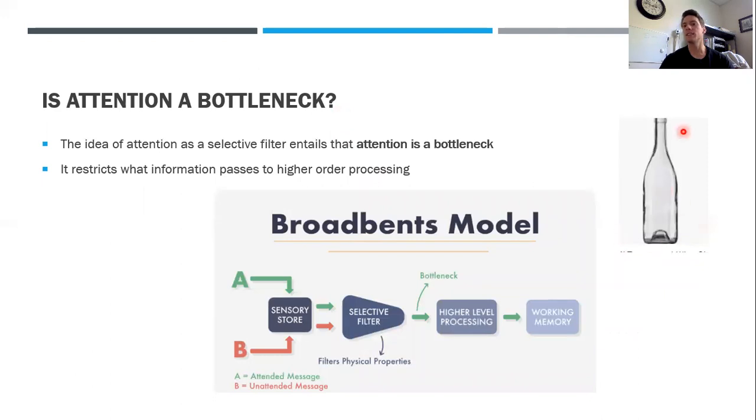This idea is that attention is serving as a bottleneck. Here's a classic example of a bottle, a glass bottle. You'll note that bottlenecks get narrower at the top than at the bottom. This has been transferred into a cognitive model—Broadbent's model of attention. The idea is that some sensory information is coming in and there's this selective filter. This is where attention is working to choose what gets passed on to higher-level processing.